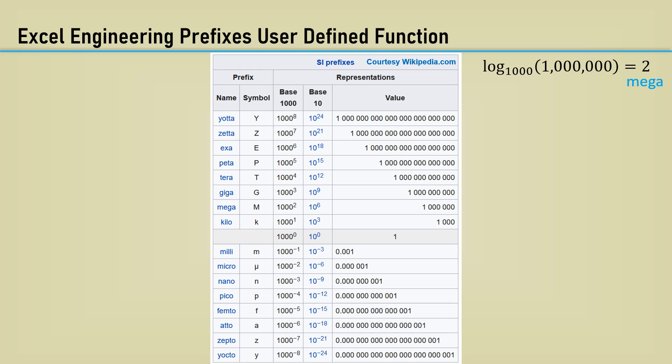Therefore, the log base 1000 of one million is 2 and the prefix should be mega, and the log base 1000 of one millionth is minus 2, so the prefix would be mu.